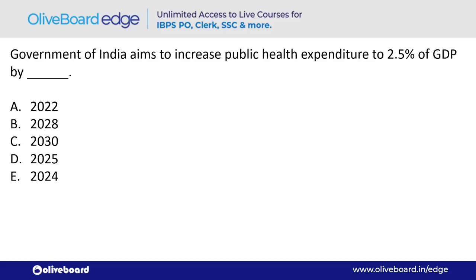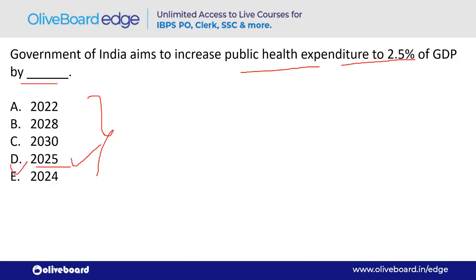The Government of India aims to increase public health expenditure to 2.5% of GDP by which year? The answer is 2025 — option D.